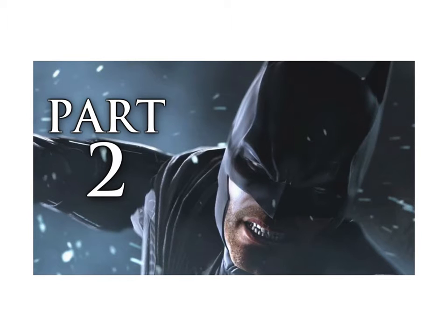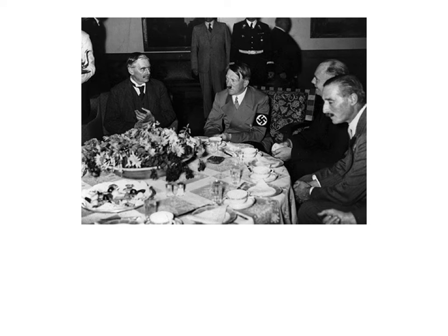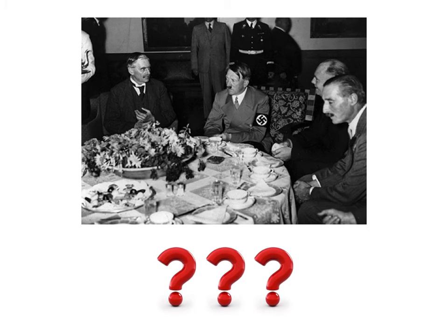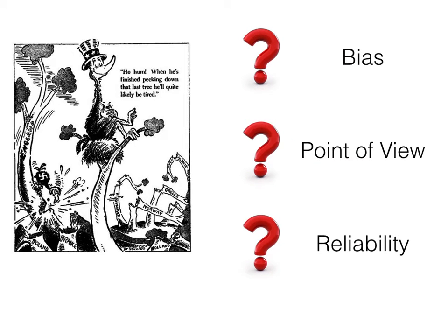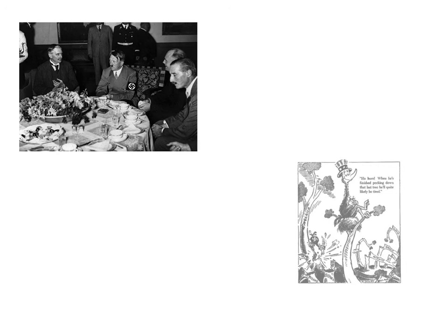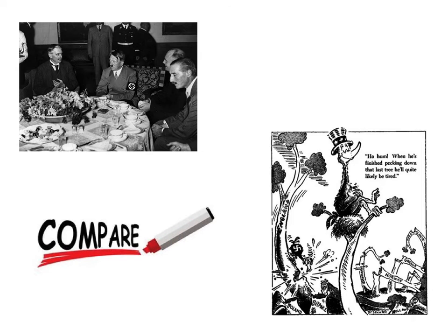Part 2: The second portion of the test will consist of two separate documents that have approximately nine short answer questions in total. The first document will be either historical or geographic in nature, followed by two or three short answer questions. The kids will then answer a few questions about a second related document, including sourcing data and checking for bias, point of view, and reliability. The final step of the second section will require kids to compare and contrast those two documents.